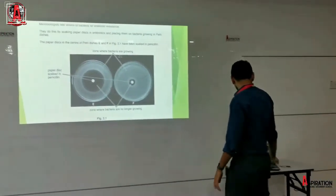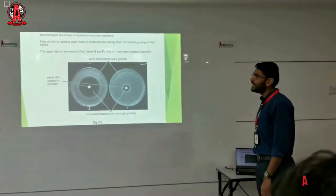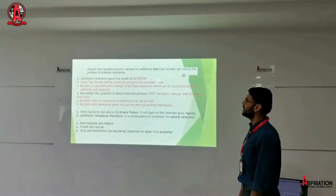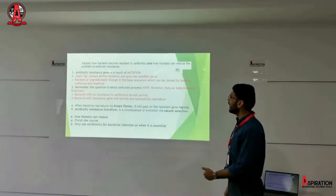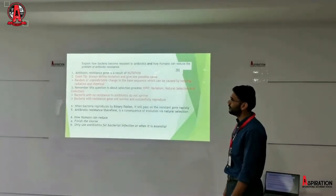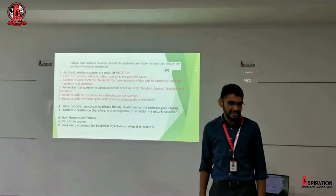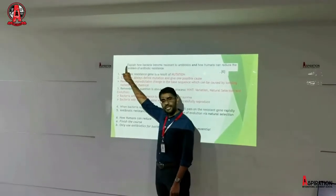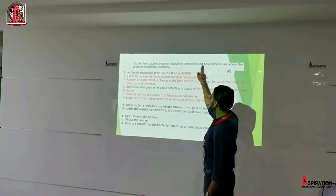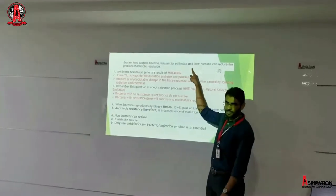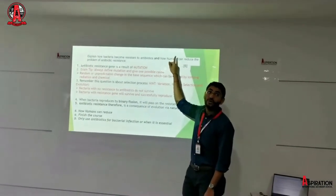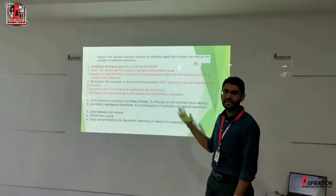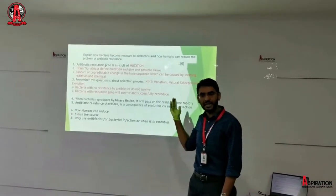So this will be the question that is commonly asked. The question is: explain how bacteria become resistant to antibiotics, and how humans can reduce the problems of antibiotic resistance. What students fail to notice is that we have an explanation question here, and we have a description question here. So we need to reason out to the examiner why such phenomena take place.